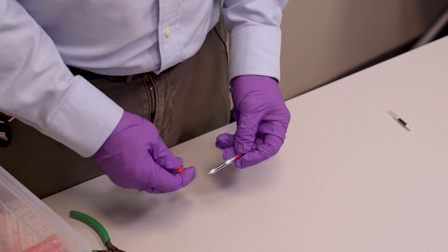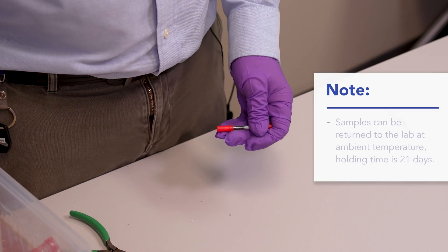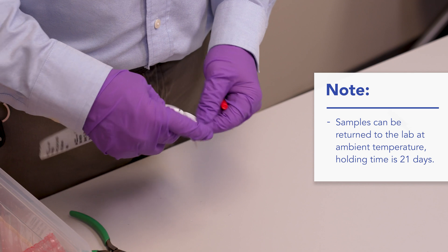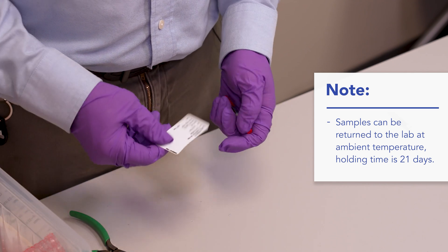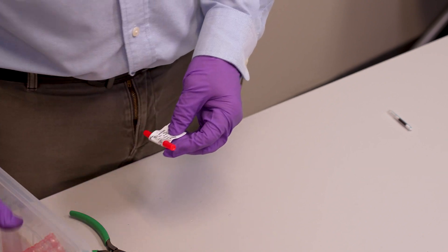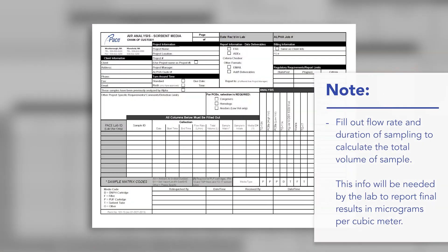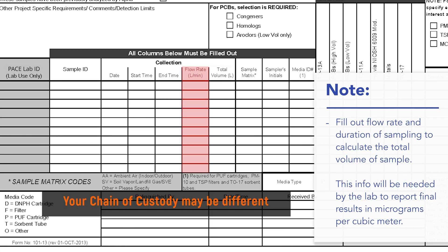At that point you want to fill out your sampling label and attach that to the tube. Then on the chain of custody, you'll need to fill out the areas with your flow rate and duration of sampling. The laboratory will need to confirm that so they can calculate the total volume of sample that will be needed to report final results in micrograms per cubic meter.